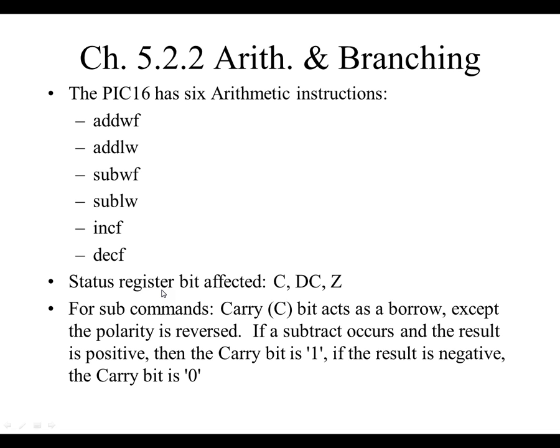We're going to introduce six arithmetic instructions. When we're doing branching, it's important to be able to compare numbers — whether a number is greater than or less than other numbers. The way we do that is by subtracting. If you subtract one number from another and the result is negative, then you can determine a greater than relationship. If it's positive, then you have less than — or vice versa, whichever direction you want to go. So you can see that it's important, when doing branching, that we have some arithmetic instructions.